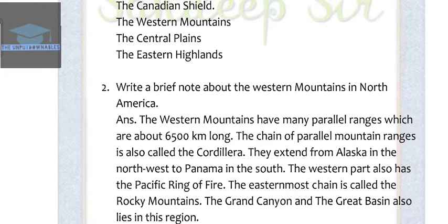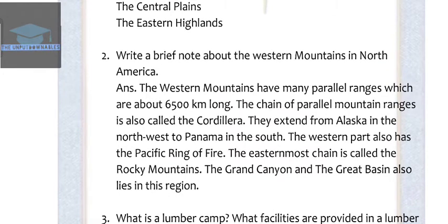Question 2: Write a brief note about the Western Mountains in North America. The answer is the Western Mountains have many parallel ranges which are about 6,500 kilometers long. The chain of parallel mountain ranges is also called the Cordillera. They extend from Alaska in the northwest to Panama in the south. The western part also has the Pacific Ring of Fire. The easternmost chain is called the Rocky Mountains. The Grand Canyon and Great Basin also lie in this region.